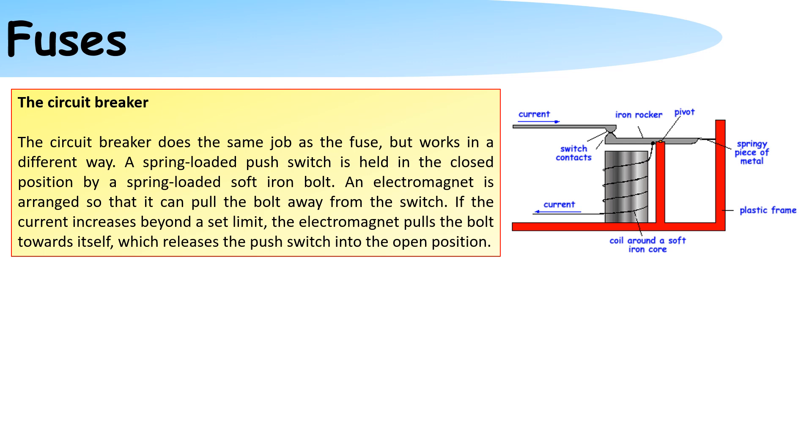If the current increases beyond a set limit the electromagnet pulls the bolt towards itself which releases the push switch into the open position. This therefore will create a short circuit or a breaking circuit so the current will be turned off.